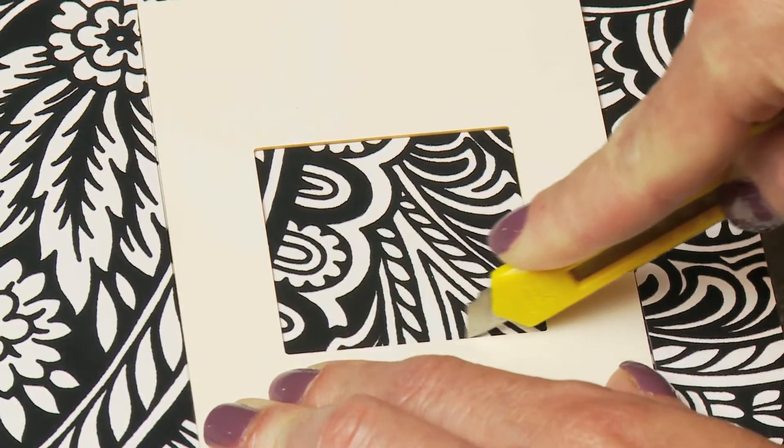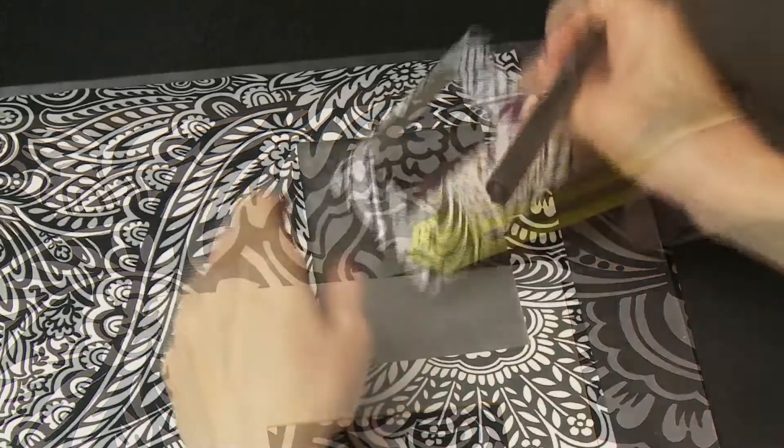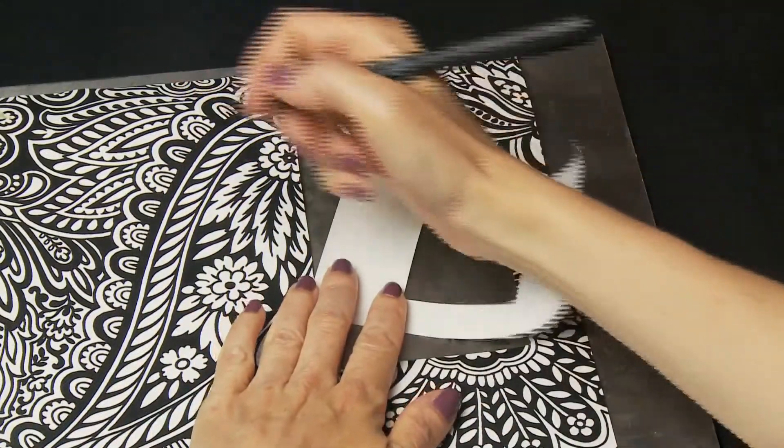Use the blade to cut out the device hole and cut out around the template. Turn the wallpaper around and label the top.